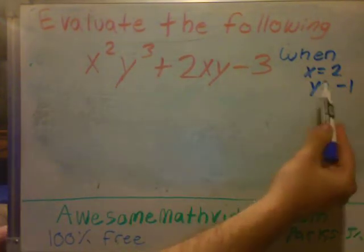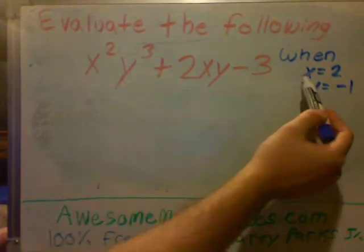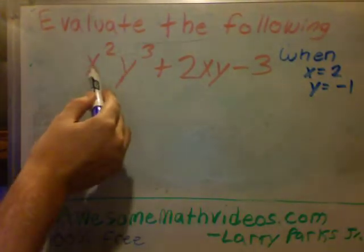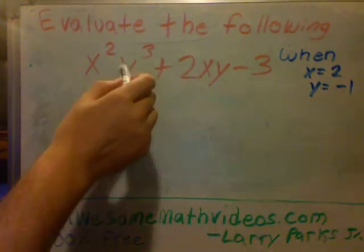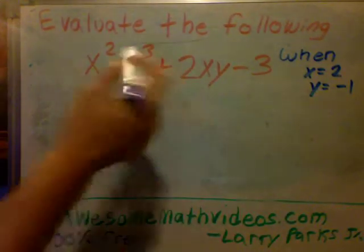So what we're going to do is we're going to plug those numbers in. So for instance, x equals 2, we're going to put a 2 there and a 2 there. Y equals negative 1, we're going to put a negative 1 there. So let's go ahead and do that.